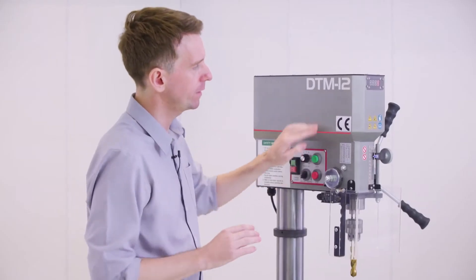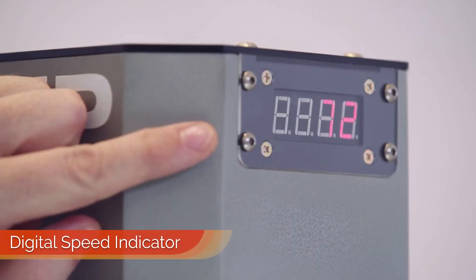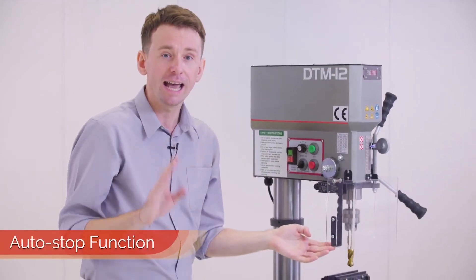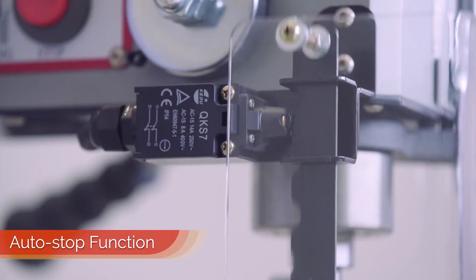Now at the front, the operator can always check the spindle speed thanks to this digital indicator. We have a protective shield with sensor and an automatic shut-off function.